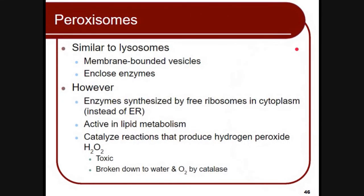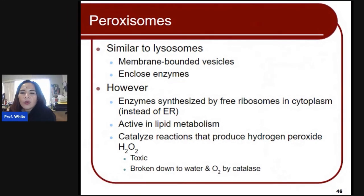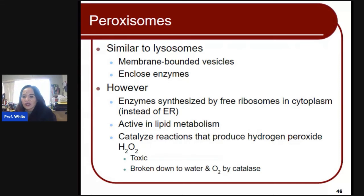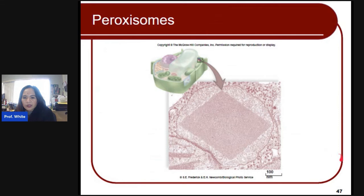Peroxisomes are similar to lysosomes. However, the enzymes are synthesized by free ribosomes in the cytoplasm instead of the endoplasmic reticulum. They are active in lipid metabolism and catalyze reactions that produce hydrogen peroxide. They are toxic and usually break down hydrogen peroxide into water and oxygen by the enzyme catalase. So peroxisomes are normally for lipid metabolism and catalyzing reactions via catalase.